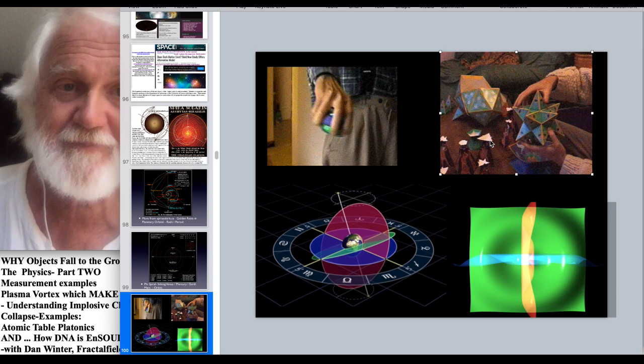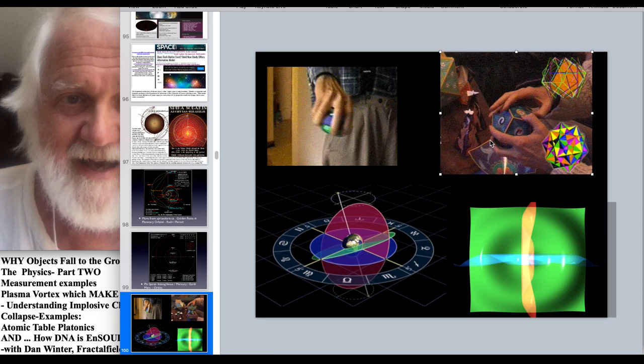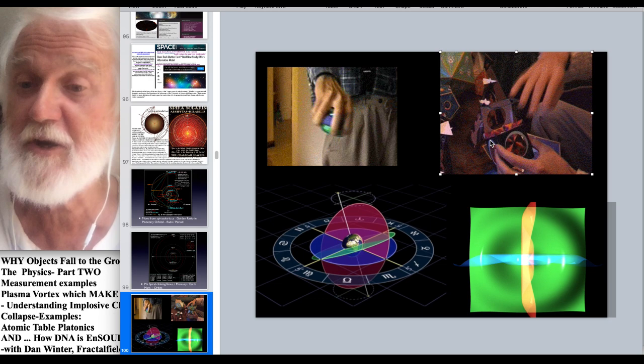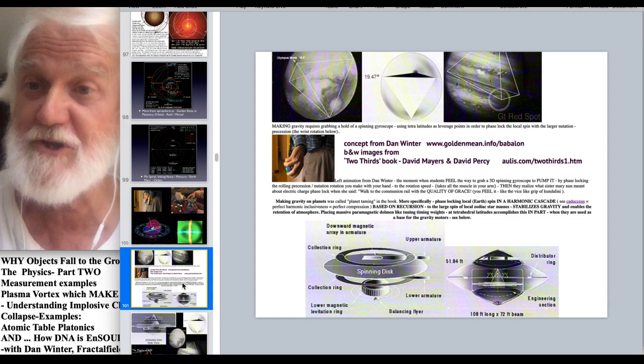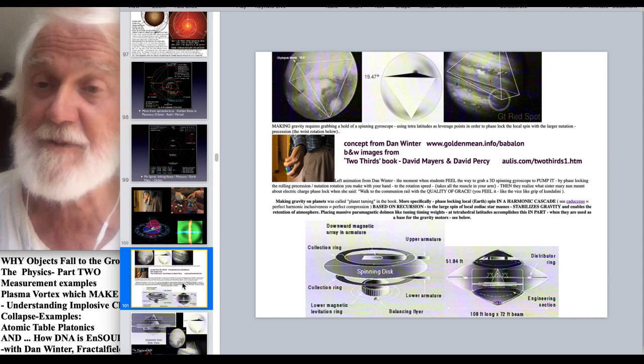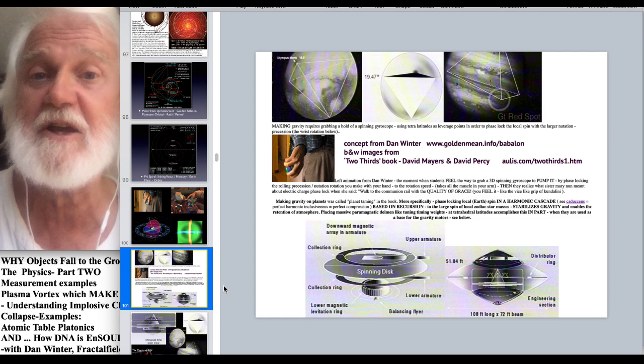And later we'll look at this we have how the platonics nest one inside the other is not only you know Kepler's solution to the gravity stability of the solar system was platonic nesting. But we're going to see that is also the solution to atomic table nesting. which is we're going to look at the physics of why the perfect nest of platonic solids is the perfect nest of charge collapse. That is the point. And that then explains the atomic table and this prediction of gravity relations.